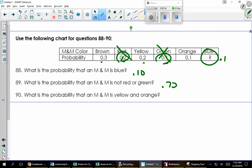And then the next one is a little bit tricky, perhaps. It says, what's the probability that an M&M is yellow and orange? I've only got one M&M. It can't be two colors. There's a 0% chance that that M&M is yellow and orange.